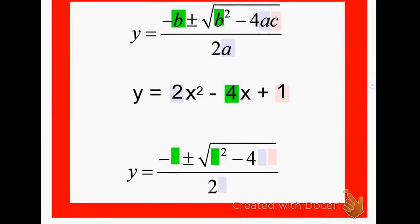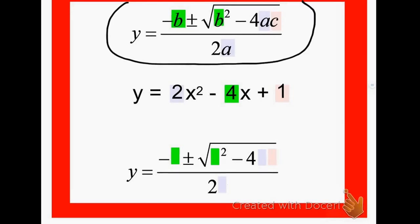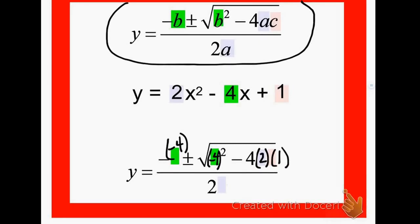Here's another example. I want to use the quadratic formula: negative b plus or minus square root of b squared minus 4ac, all over 2a. I've color coded it — the b term is negative 4 because of the minus sign. That gives me negative 4 squared — it helps to put that in parentheses — minus 4 times a, which is 2, in parentheses, times c, which is 1, in parentheses, all over 2 times a.